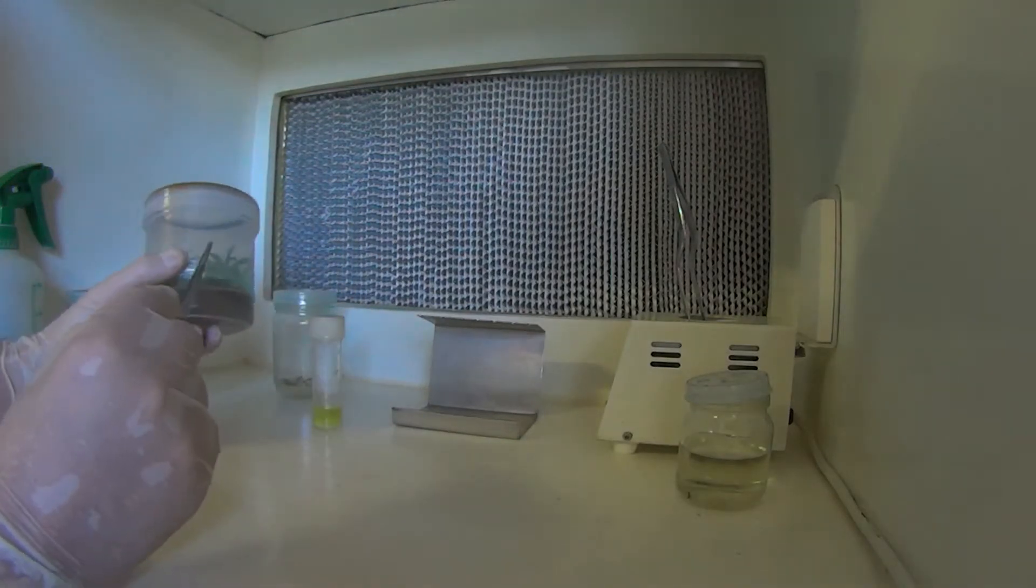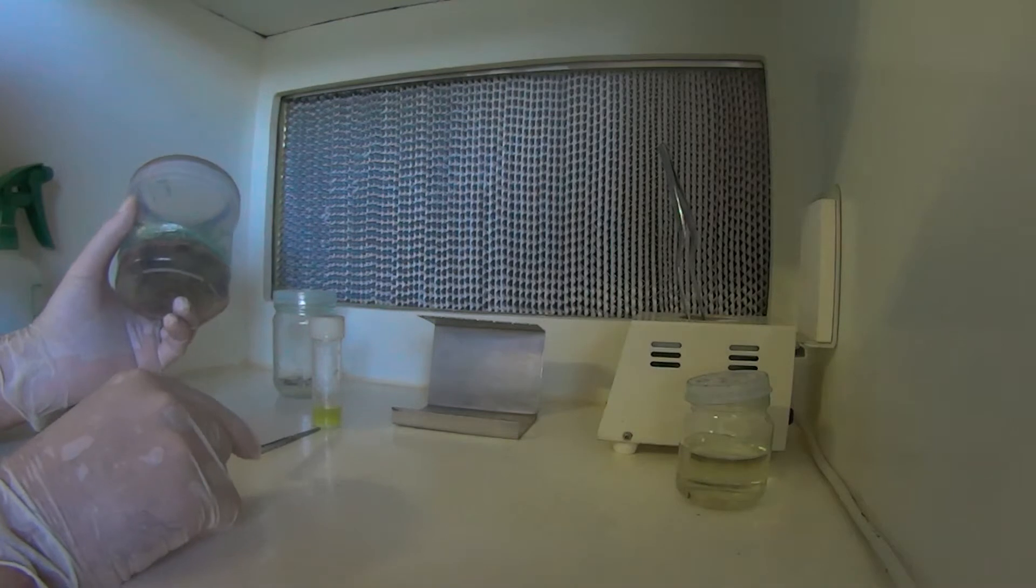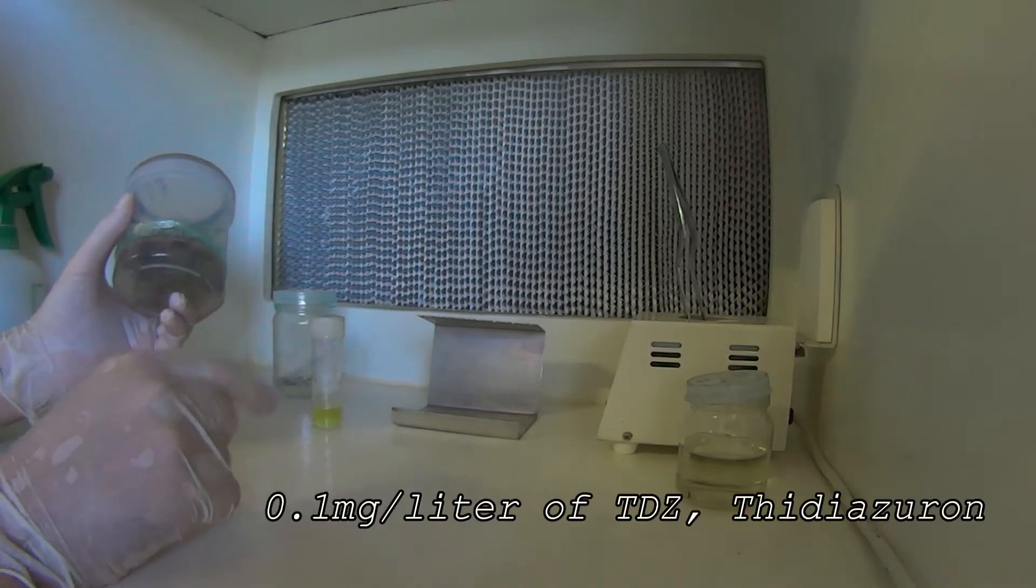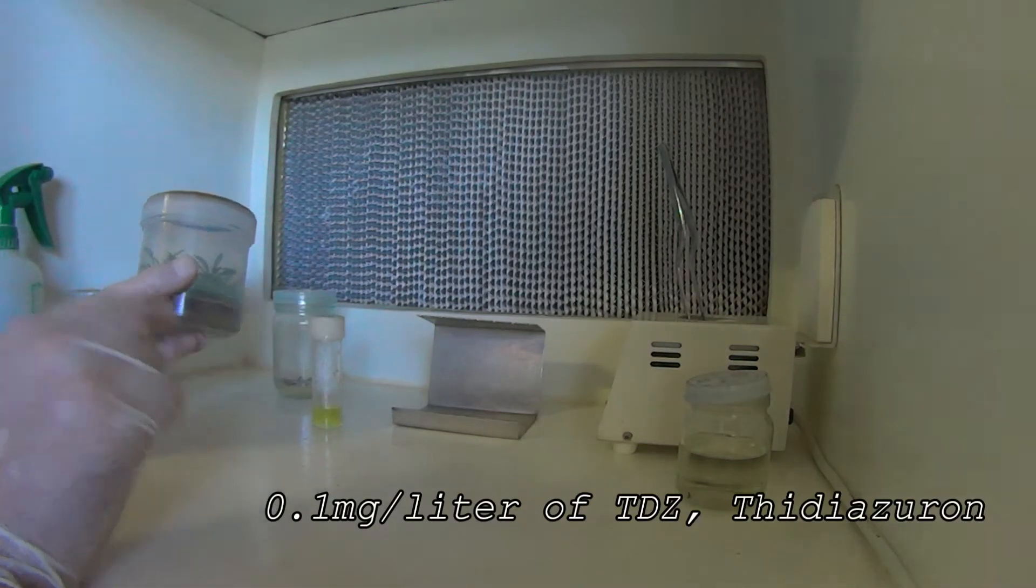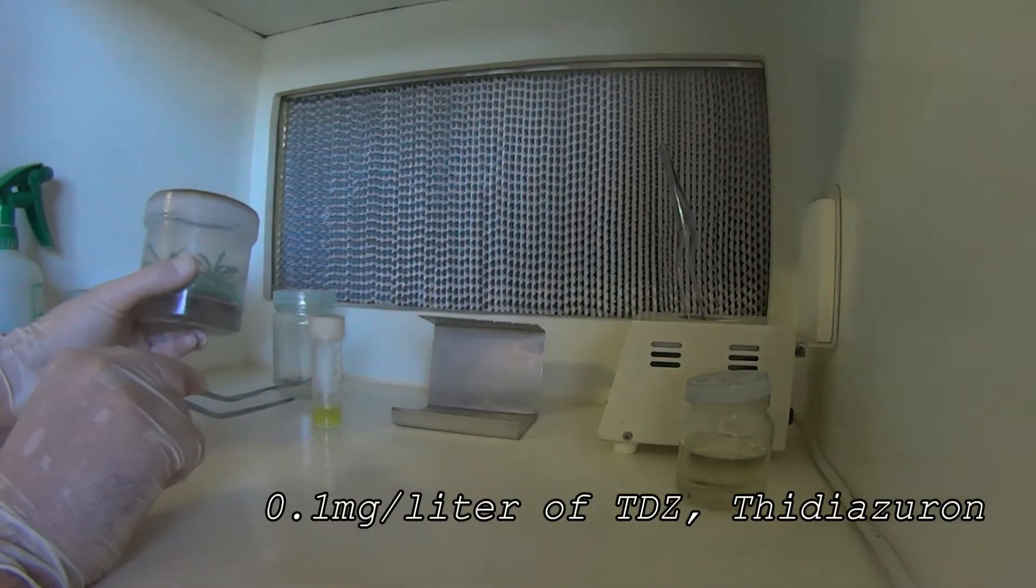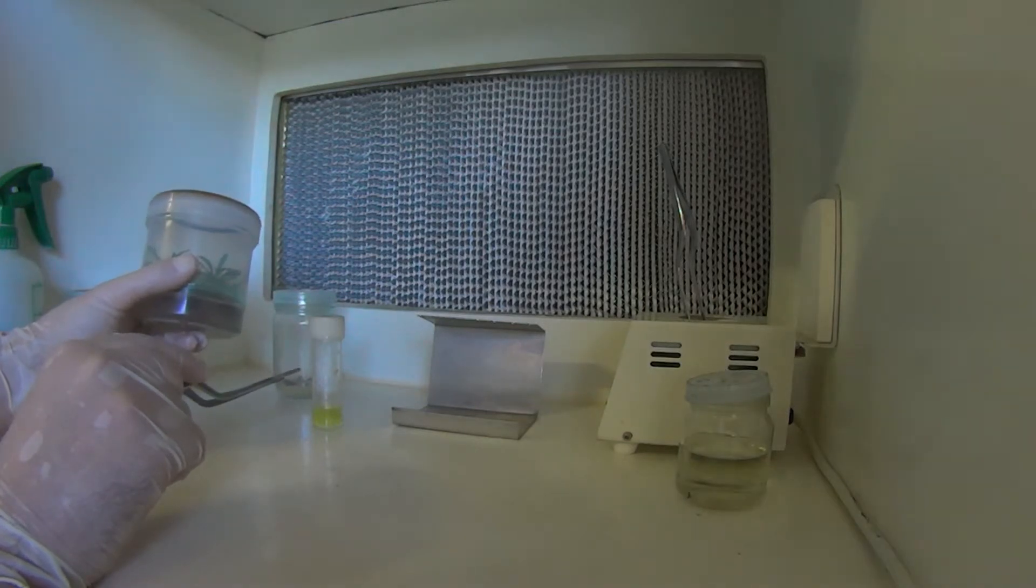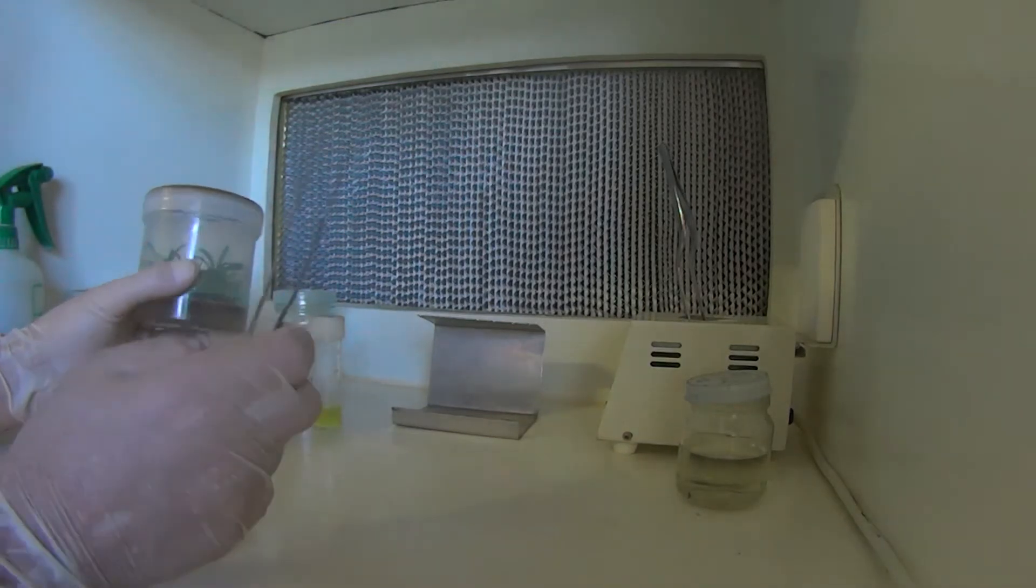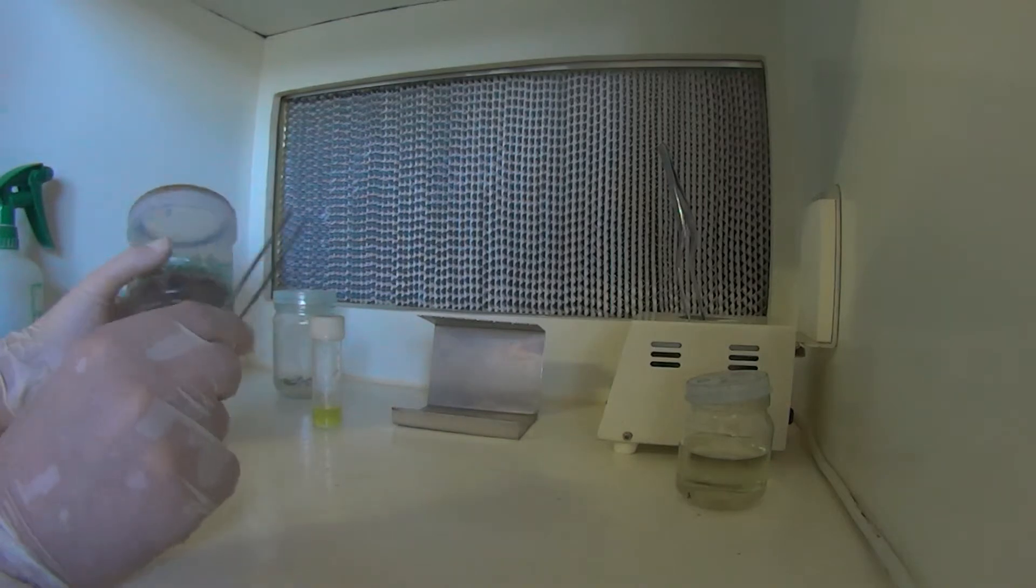So what we're going to do is remove one of the small plantlets from in here and put them into some other medium. Now this medium, as you can see, is colored yellow. That's just a food dye. It has some TDZ in there. Basically that will promote callus growth, so that's what I want to happen. Take one plant out of here, put it in there and turn it into a callus base, basically.